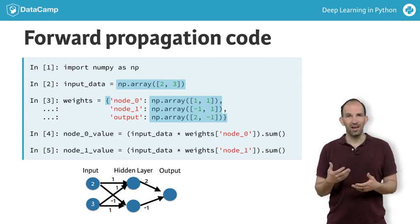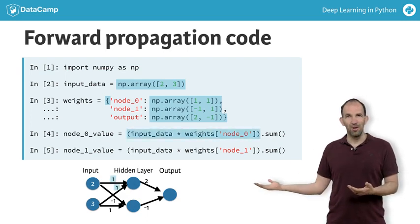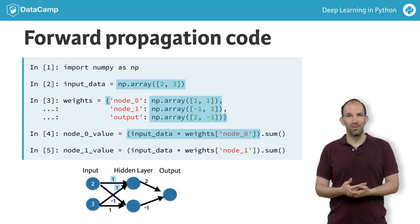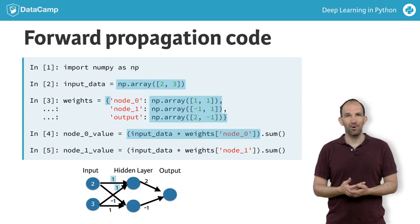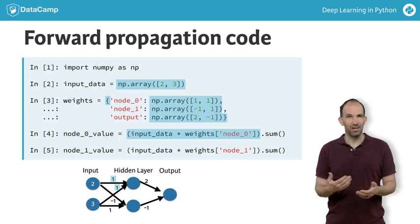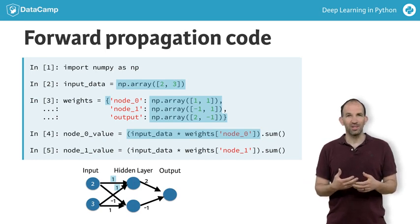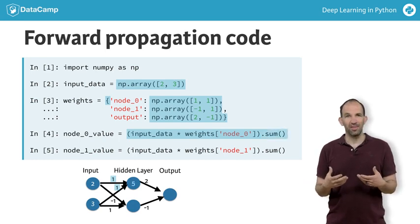Let's start forward propagating. We fill in the top hidden node here, which is called node 0. We multiply the inputs of that weight for that node and then sum both of those terms together. Notice that we add two weights for node 0. That matches the two items in the array it is multiplied by, which is the input data. These get converted to a single number by the sum function at the end of the line.